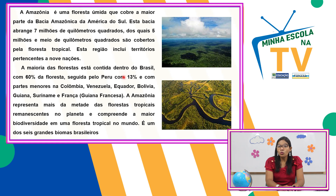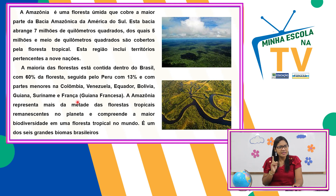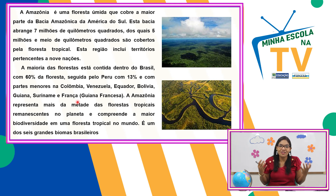Seguido pelo Peru, com 13%. E com partes menores na Colômbia, Venezuela, Equador, Bolívia, Guiana, Suriname e a Guiana Francesa — um território francês pertinho da gente. A Amazônia representa mais da metade das florestas tropicais remanescentes no planeta — não só no Brasil, no planeta todo — e compreende a maior biodiversidade em uma floresta tropical do mundo. É um dos seis grandes biomas brasileiros. Os números são bem altos e relevantes, caracterizando essa diversidade sem igual.